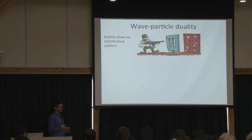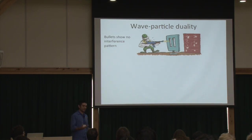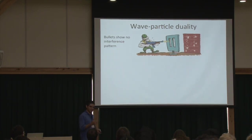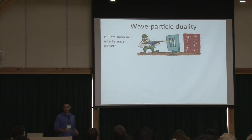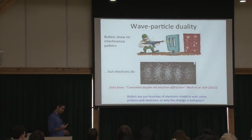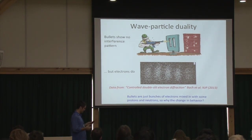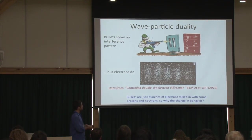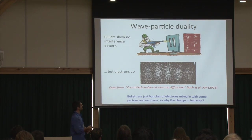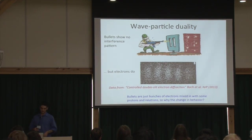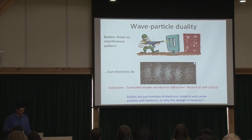Let me start with some intuition. If you have a two-path interferometer, we all know that if you shoot bullets at that interferometer you won't see an interference pattern. But if you shoot electrons, you can see interference — this is actually a real data set from 2013 involving a double-slit electron diffraction experiment.